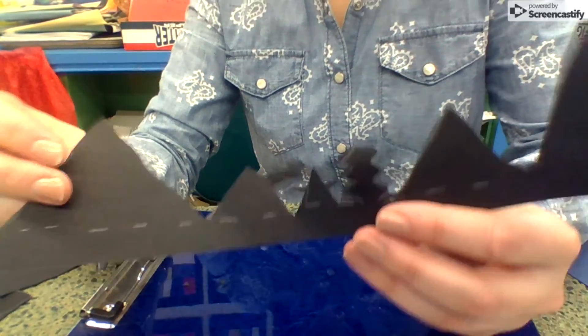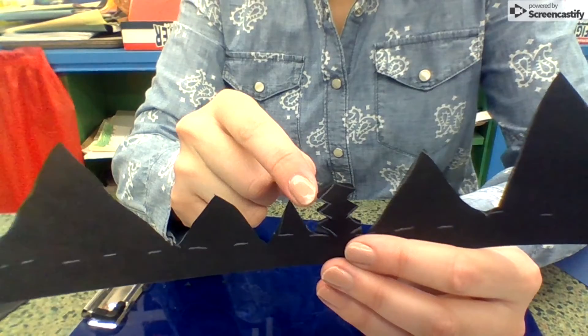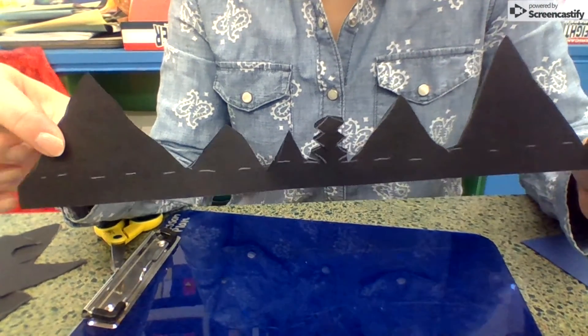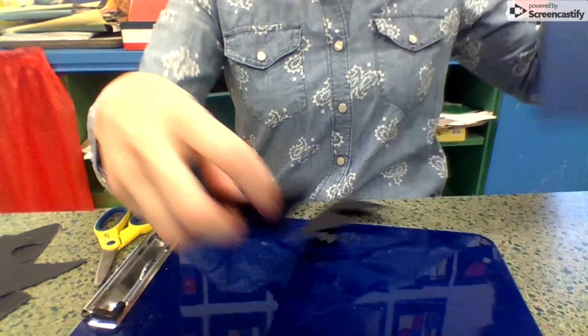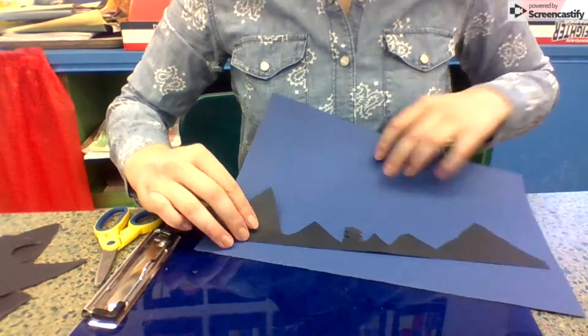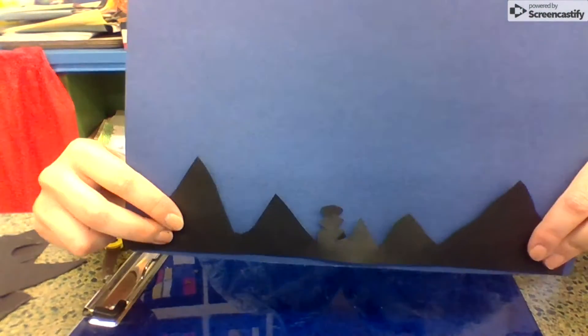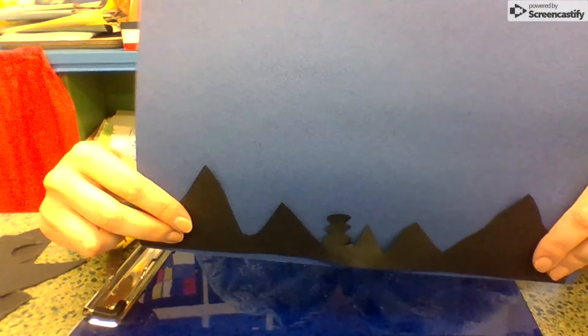But when it's finished, it'll come out like that. I've cut all my little pieces. When we are finished with this, if we have time, we're going to glue it onto the bottom of our blue paper to create the landscape for our silhouette.